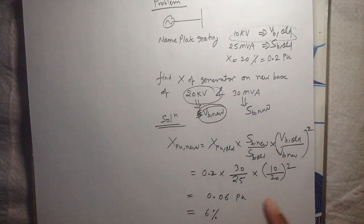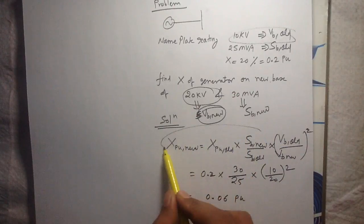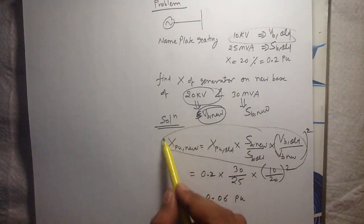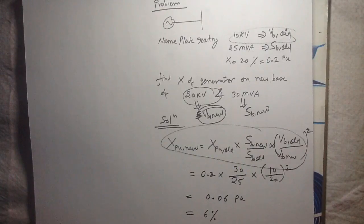This is the solution of the question, and this formula is very very useful in power system analysis when you are making the per unit reactance diagram. So remember this formula.